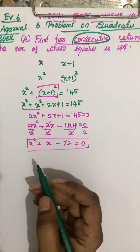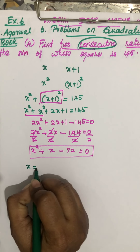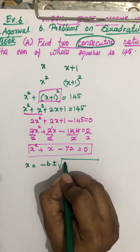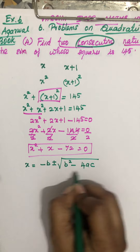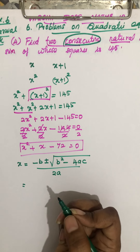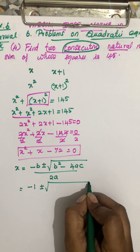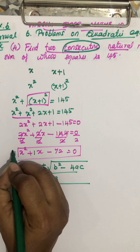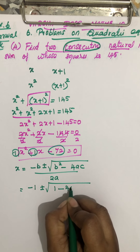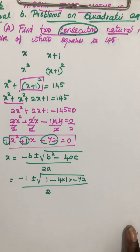Now I'll use the quadratic formula: x equals minus b plus or minus root of b squared minus 4ac, all divided by 2a. Here a equals 1, b equals 1, and c equals minus 72. So x equals minus 1 plus or minus root of 1 minus 4(1)(minus 72), divided by 2.